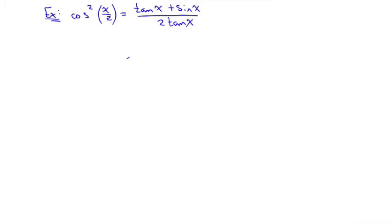Verify the identity. You can't solve it — the answer is all real numbers. Which side do you want to work with? The right. The right-hand side has tangents and sines but the left only has cosine, so start by changing tangent to sine over cosine. The first step: rewrite as (sinx/cosx + sinx) over (2sinx/cosx).